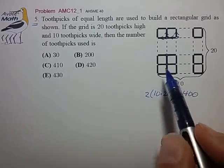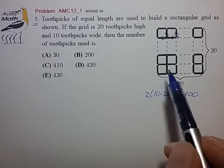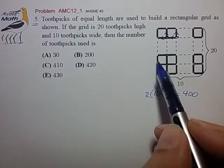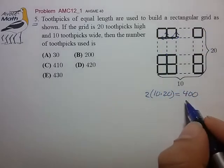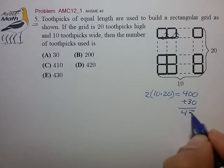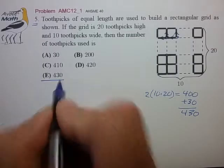And we just have to pick up the toothpicks that don't get counted in this process, and that amounts to 20 toothpicks on the left and 10 toothpicks on the top edge, for a total of 430, and that's choice E.